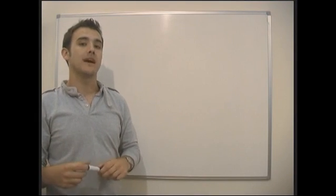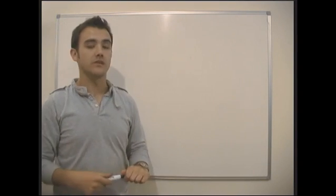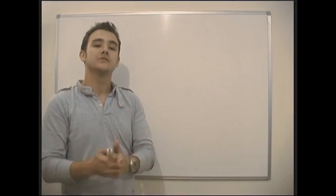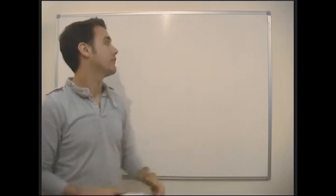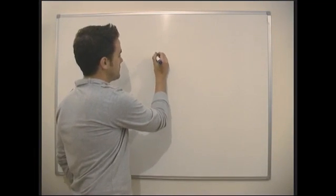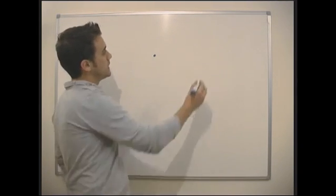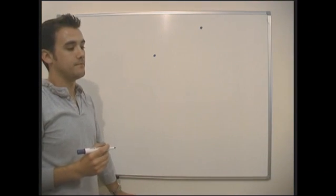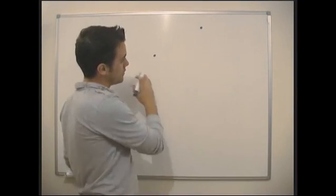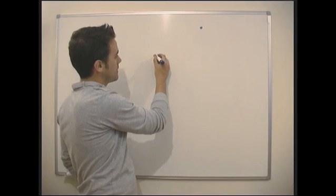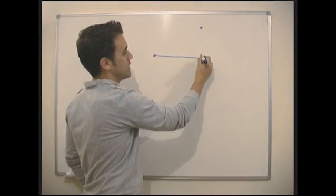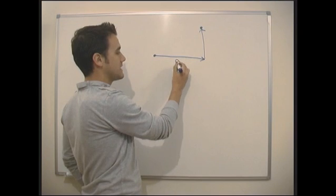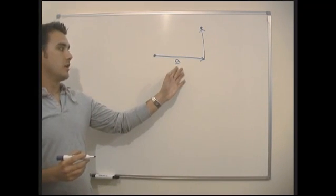Now we're going to talk about vectors. Vectors are one of those things a lot of people find quite confusing, but they're actually relatively straightforward. They're effectively a way of telling us how to get from A to B — how to get somewhere. So I've got this point here and I want to get to this point over here. All I know how to do is go straight and up, so I'm going to tell someone: I need to go this far in this direction and then this far up. What I could say is: this is vector a.